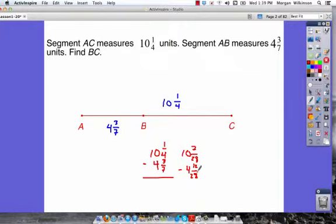Now, as you can see here, that is good, but we still have a bit of a problem. There's a couple ways we can go through this. One would be to borrow from the 10 to get a 9. We're going to add 28 to our numerator here, so we get 9 and 35 over 28.